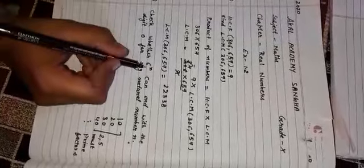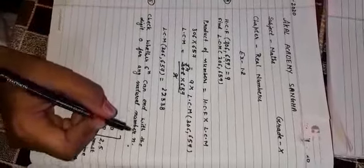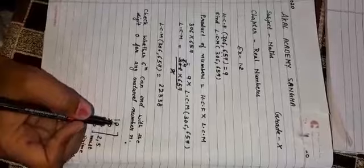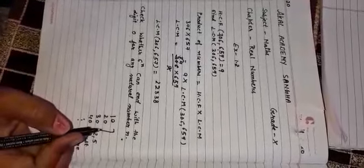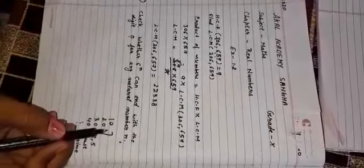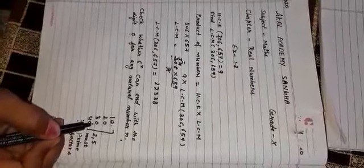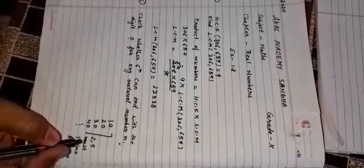Check whether 6 power n can end with digit 0 for any natural number n. As you know, those numbers which end with 0 like 10, 20, 30, 40 have 2 prime factors: 2 and 5.